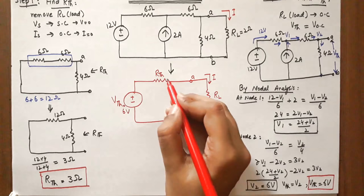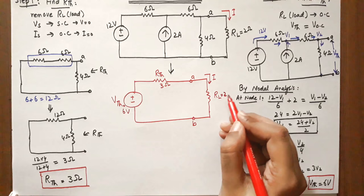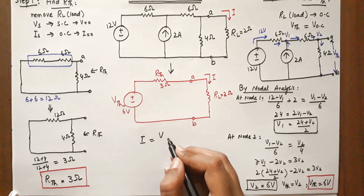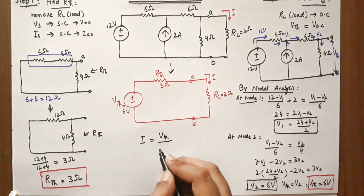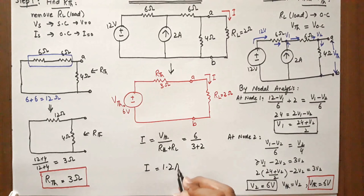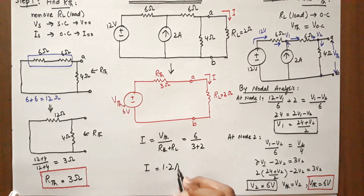R_thevenin is 3 ohms and the load resistance is 2 ohms. These two resistances are in series in the Thevenin equivalent circuit, so the current is the same throughout. The current through the load is 1.2 amperes.